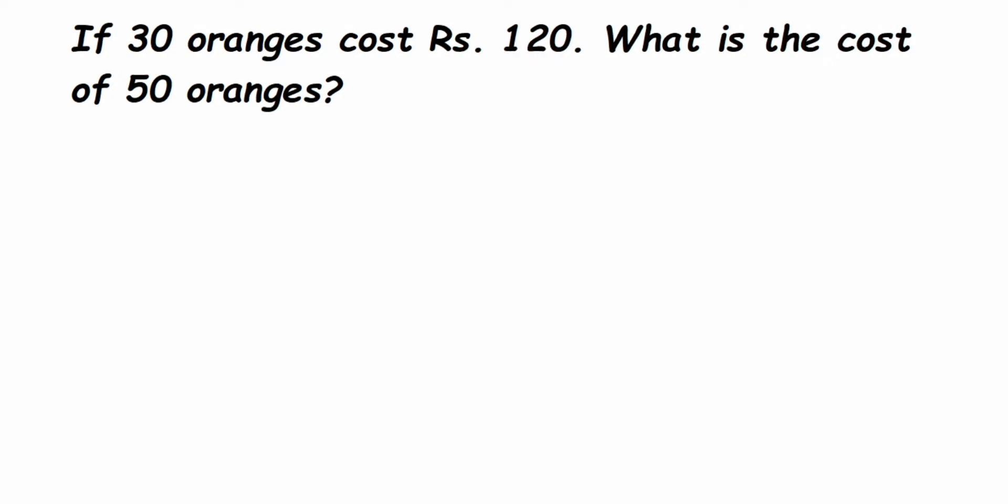We have to find the cost of 50 oranges. We're going to use the unitary method. What is the unitary method? It means we're going to find the cost of one orange first, and then find the cost for whatever is given in the question.